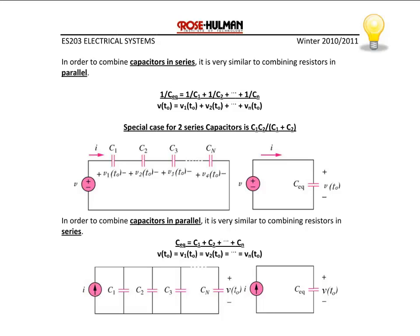Now let's discuss capacitors. Capacitors in series combine like resistors in parallel. So if you have two capacitors in series, you can use the product over the sum to find the equivalent capacitance. If you have more than two, it's 1 over the sum of the reciprocals. To find the initial voltage for a capacitor, you use KVL, where the sum of the voltages around the loop must sum to 0 — take the sum of the individual initial voltages. Capacitors in parallel combine like resistors in series, so you simply add them together.